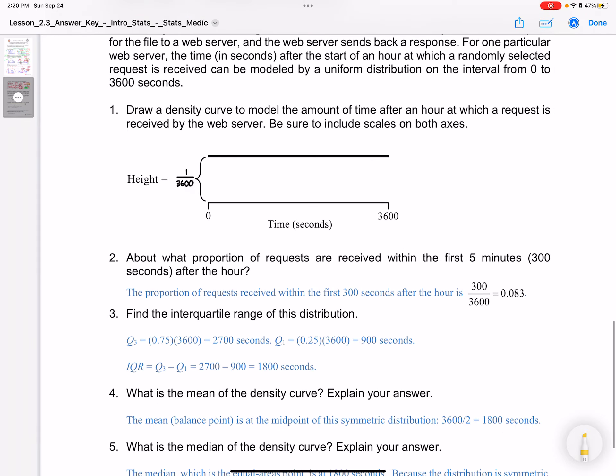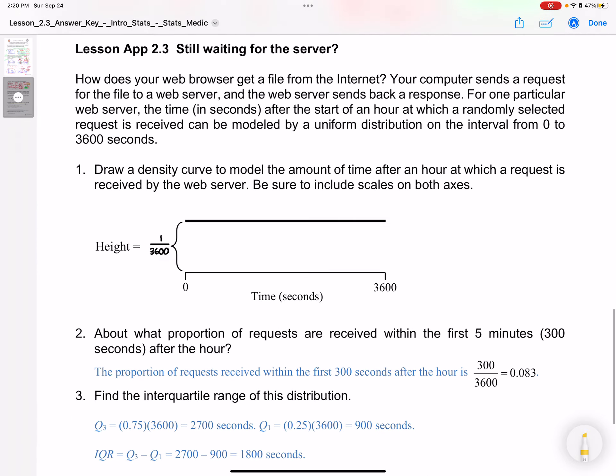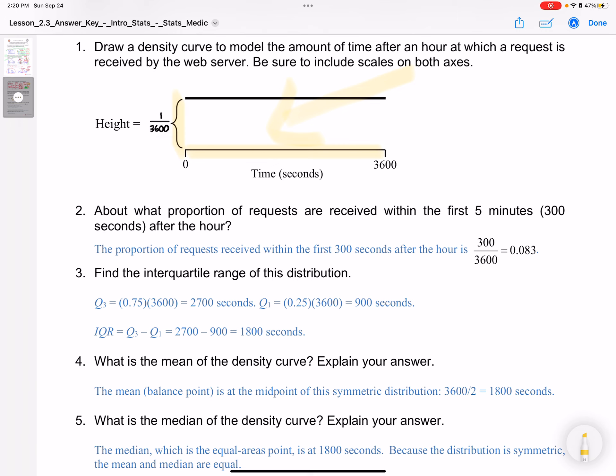Let's look at the check for understanding. Draw the density curve to model the amount of time after an hour at which requests are received by the web server. Here we have the same thing. The height is 1 out of 3600, and the length is 3600. The area under here is 1. This says about what proportion of requests are received within the first 5 minutes. 5 minutes is 300 seconds. We got 300 seconds by 5 times 60.